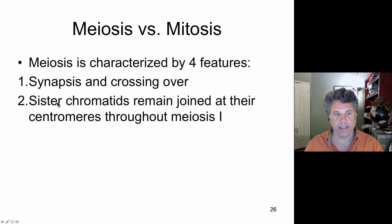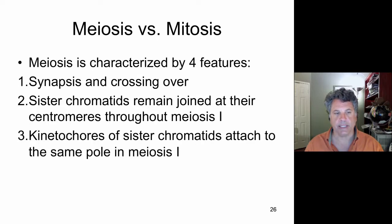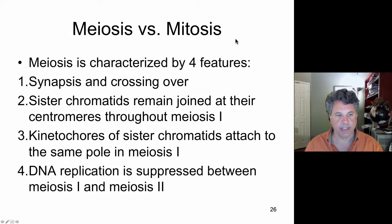And in meiosis I, the first meiotic division, the sister chromatids remain joined. At anaphase they do not separate, rather they go together to the same pole. And that is because the kinetochores of sister chromatids on the same chromosome attach to microtubules from the same pole in meiosis I. Naturally that does not happen in mitosis.